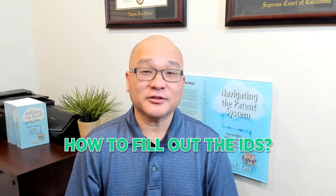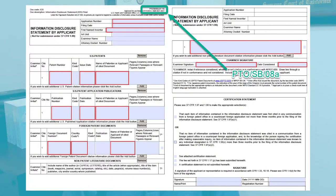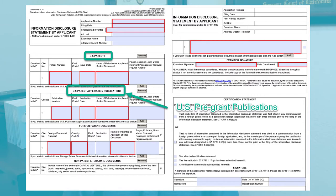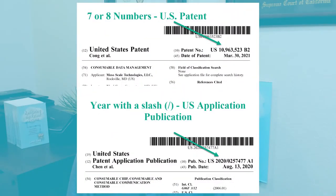So how do you fill out the information disclosure statement? You download the IDS PTO form, which will tell you what information you need to submit. The first two sections are for US patents and US pre-grant publications. The second section refers to applications that have been published — they are not patents, but merely publications of applications that have been filed. You can tell the difference between a US patent and a US patent application publication by the numbers at the upper right corner of the document. You don't have to submit these documents to the patent office, but only need to list them in the form.